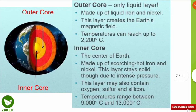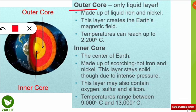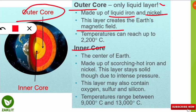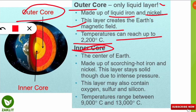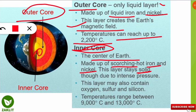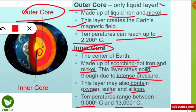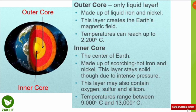Now coming to the core, which is divided into two parts: the outer core and the inner core. The outer core is a liquid layer made up of liquid iron and nickel — this layer creates the earth's magnetic field, which is what makes your compass work. The temperature in the outer core can reach up to 2200 degrees Celsius. The inner core is the center of the earth, made up of scorching hot solid iron and nickel, and stays solid due to intense pressure. It may also contain oxygen, sulfur, and silicon, with temperatures ranging from 9000 to 13000 degrees Celsius.